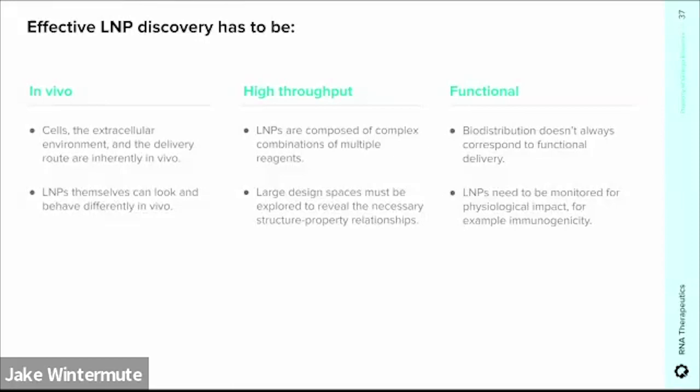The Ginkgo platform is well placed to address these challenges. Ginkgo routinely generates and tests large libraries where both delivery and functional expression are measured and deconvoluted. If you want to do LNP discovery that's both high-throughput and in vivo, you have to do it pooled — that means designing LNPs with barcodes in an array format, formulating them, and then pooling them for injection. A key challenge for a pooled screen like this is tracking both biodistribution and functional expression of each formulation. In a conventional approach, DNA barcodes can be used to track only delivery of the LNPs, but delivery of an LNP payload doesn't necessarily mean it's functional — it could be sticking to the surface of the cell and not internalized, or an LNP might enter the cell but not escape the endosome.